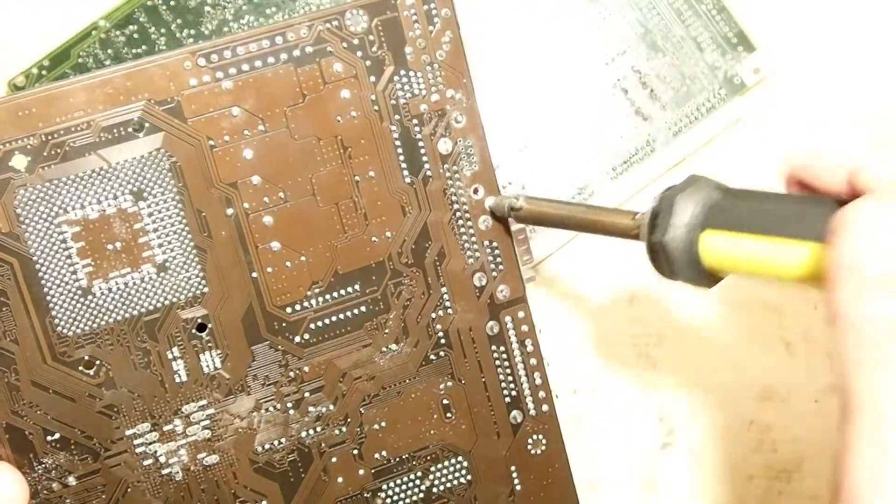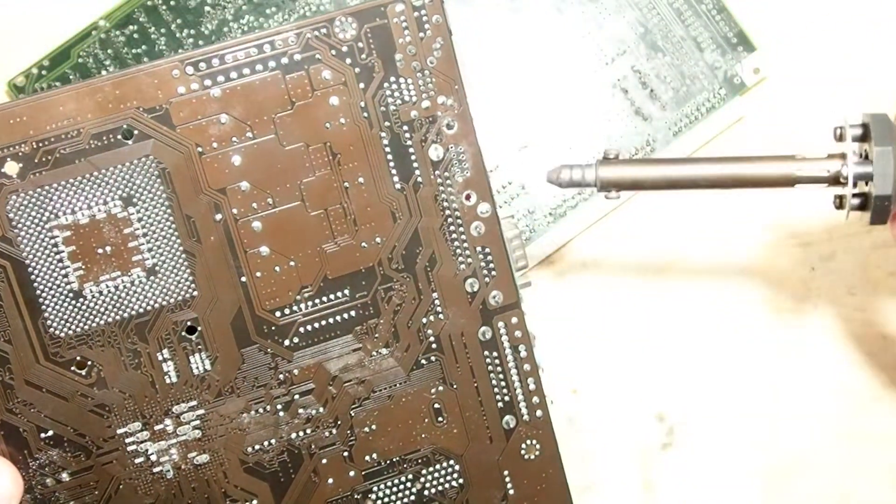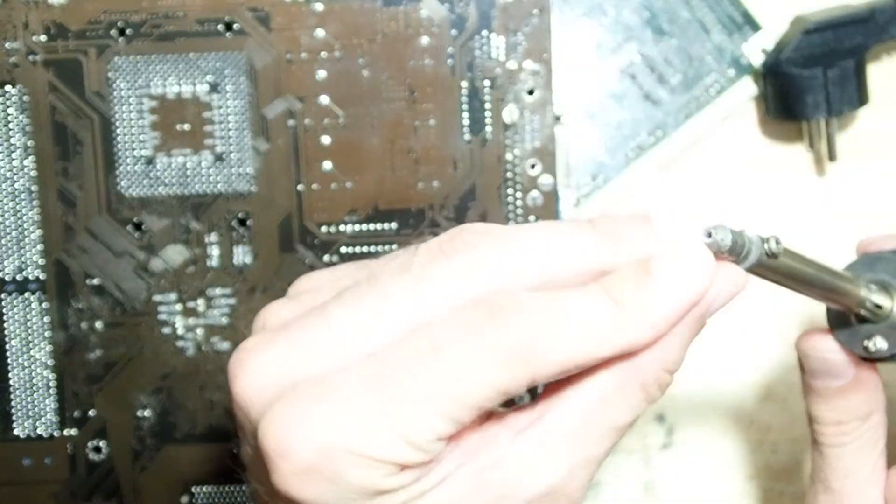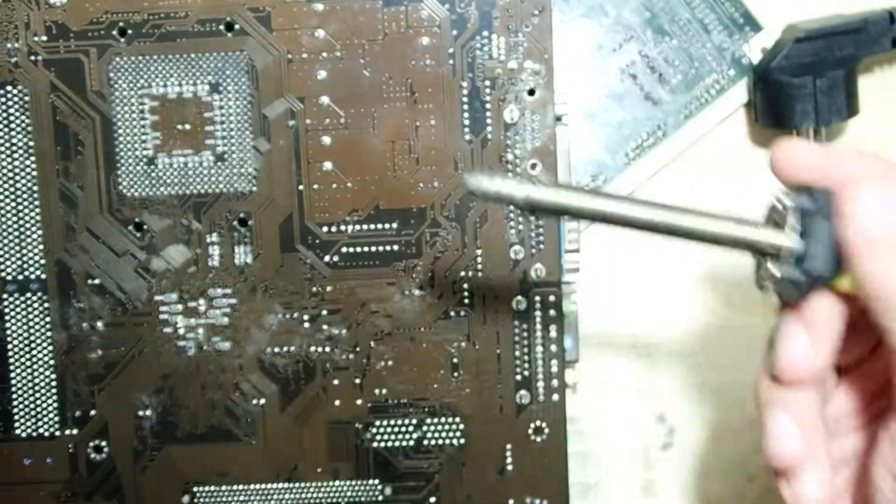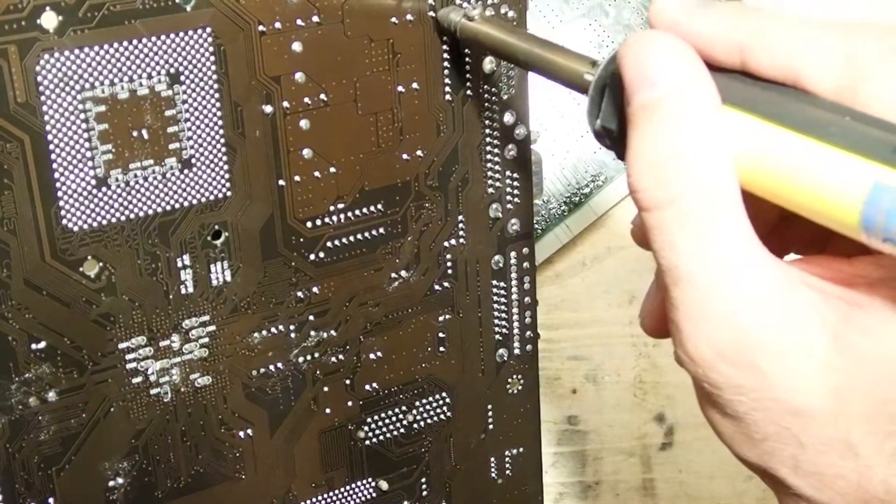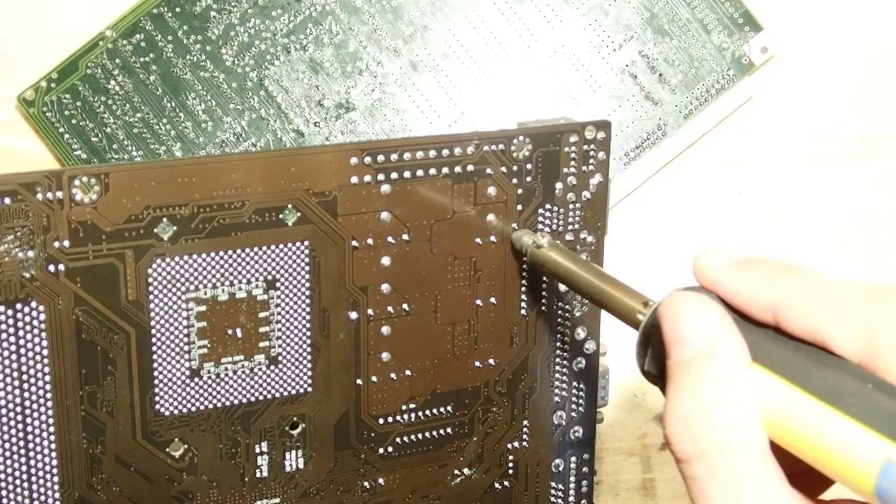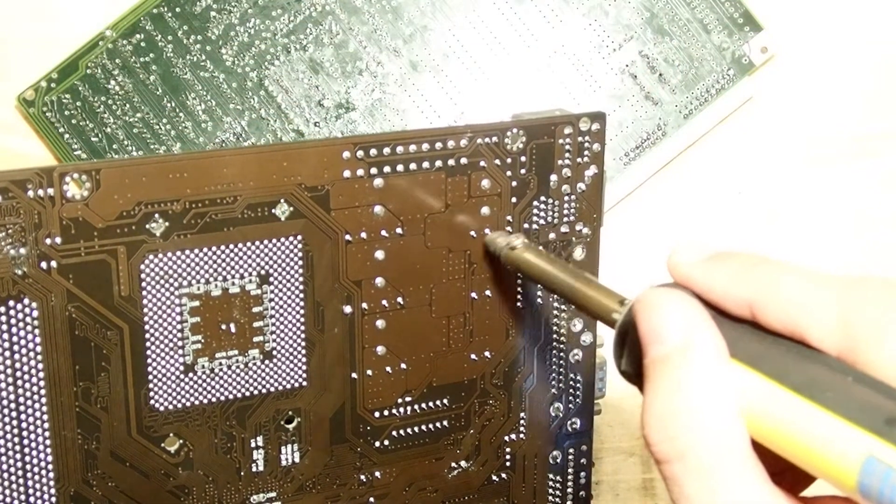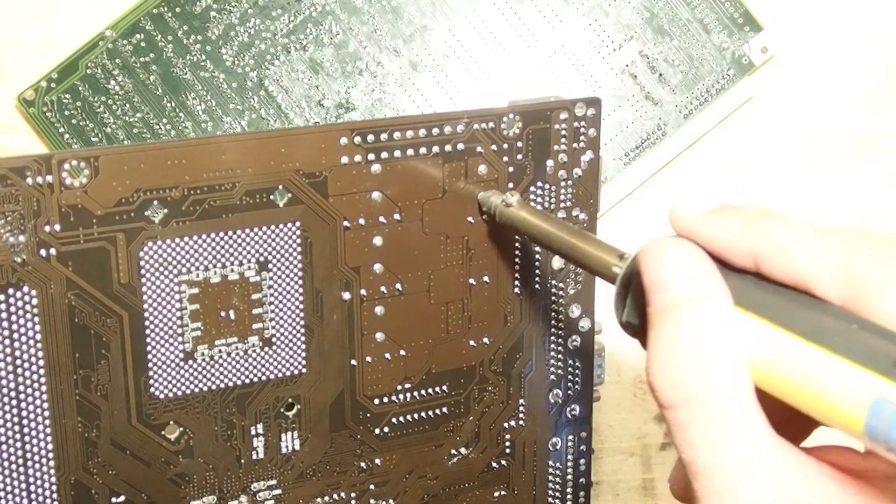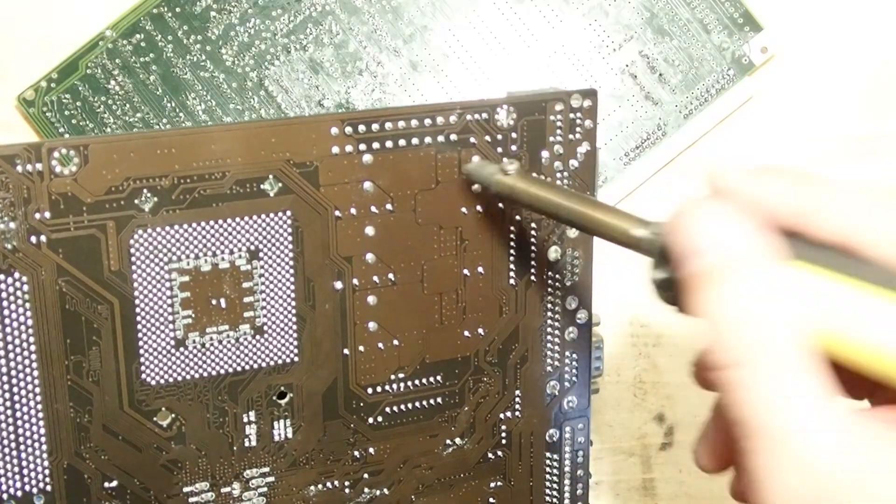The first one is if there is a bigger contact with more solder in it, you have to use the pump multiple times, so just press, release, press, release until you soak everything out. And the second problem is that the nozzle is usually too big, and such desoldering pumps you can buy only with one nozzle.